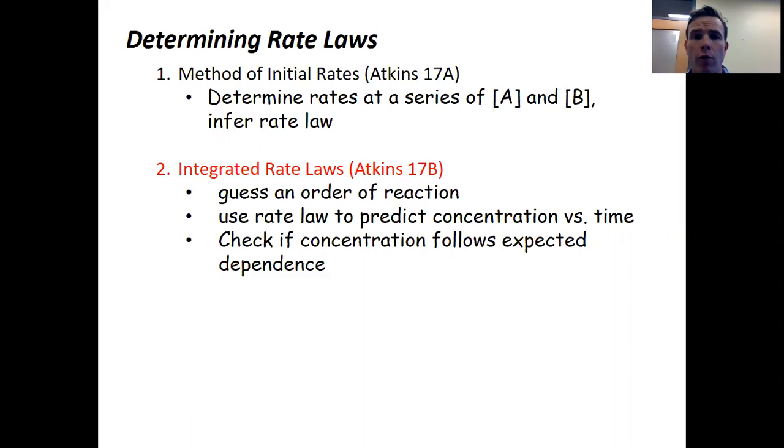We're going to talk today about the second method for determining rate laws. Last time we talked about the method of initial rates, which involved measuring reaction rates at a series of different concentrations. This one happens to be my favorite, integrated rate laws, Atkins 17B, and essentially this is a guess and check. You just sort of guess and check. And so specifically we're going to guess an order of reaction. We'll use the rate law to predict concentration versus time and then check and see if the concentration follows the expected dependence.